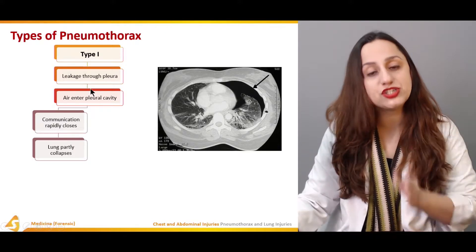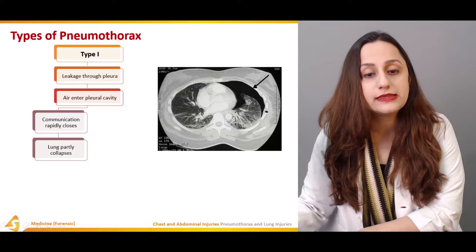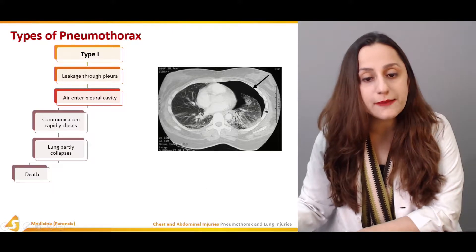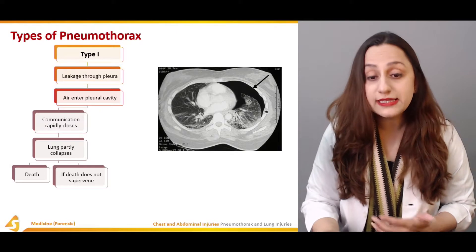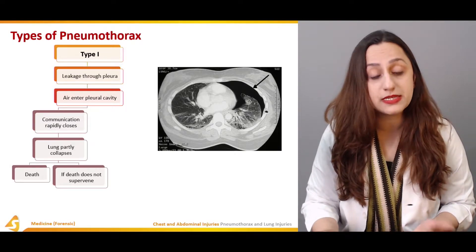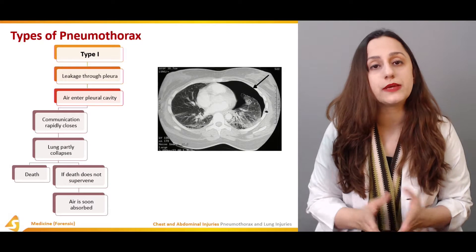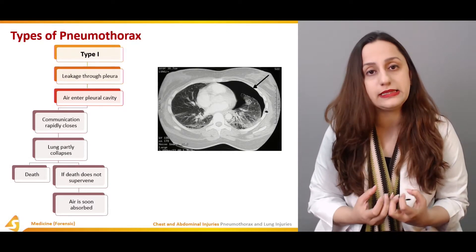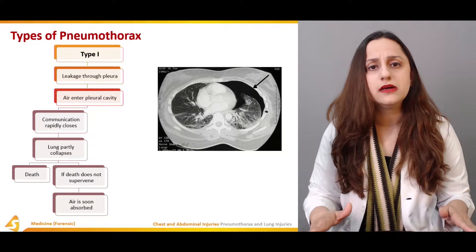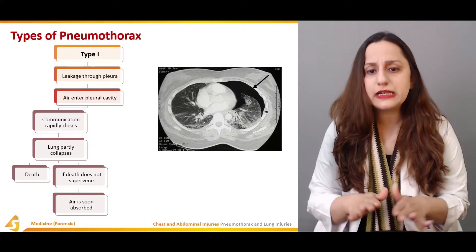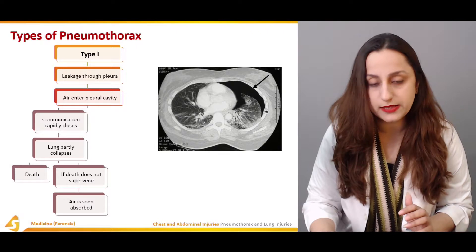This is very important for how we differentiate between different types. The lung partly collapses, and after this, death may ensue. If death doesn't supervene, the air is soon absorbed by the surroundings or by the lungs, and it can basically be a self-healing process, which can occur in some patients.